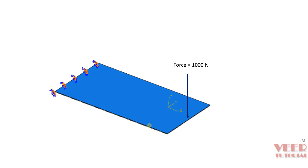In this lecture, we will continue with FRF analysis and perform the frequency response analysis of this plate. The plate is fixed from one side, and we are going to apply a force of 1000 N on the midpoint — the midpoint of one end of the plate. Under this excitation load, we are going to check the resonance condition: at what frequency resonance will occur.